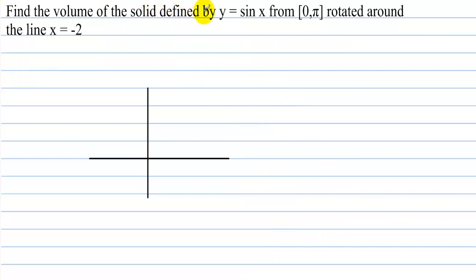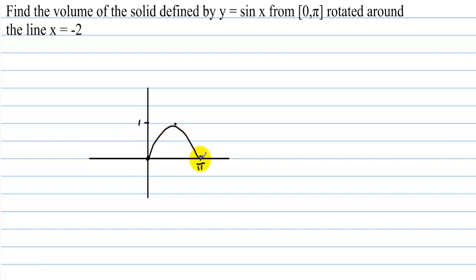Next example: find the volume of the solid defined by y equals sine of x from 0 to π, rotated around the line x equals negative 2. Let's graph sine from 0 to π — it goes up to 1 at π/2 and back down to 0 at π. We're rotating this around the line x equals negative 2, which is 2 units to the left. Let's get the 180-degree reflection.